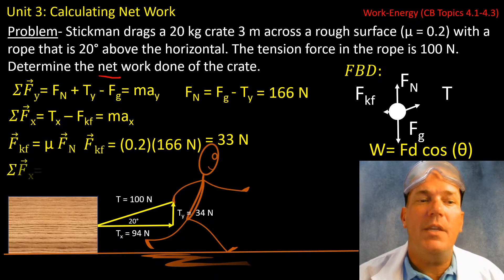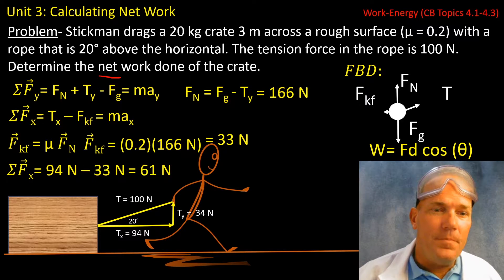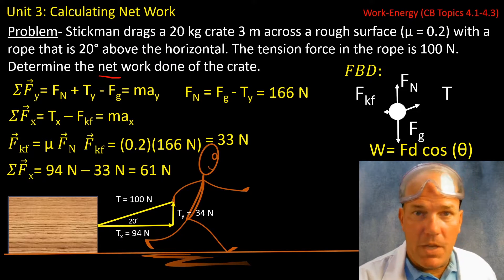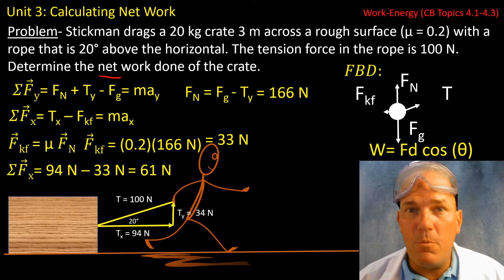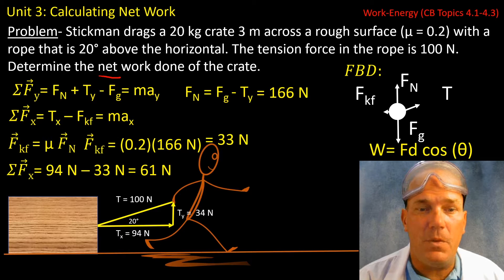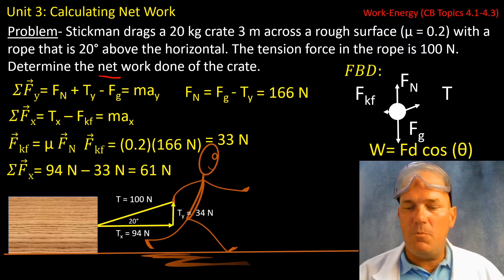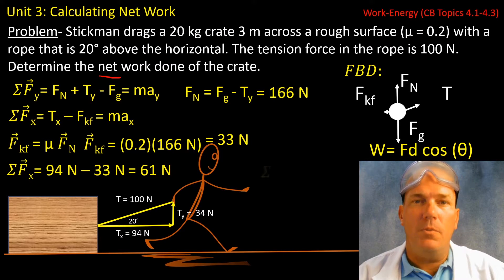So now we can finish our summation by subtracting 33 newtons from 94 newtons, where 94 newtons was that rightward component of the tension force. And we get our overall net force to be 61 newtons to the right.